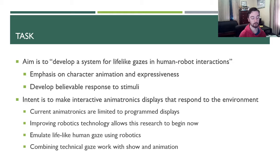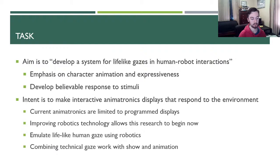Improving robotics technology allows this sort of thing to start happening now. Things like SLAM and computer vision are making it easier for robots to pick up on things happening in the environment and react accordingly. The goal of this research was to create human-lifelike gaze with robotics, combining the technical work already done with robotic gaze with a show and animation aspect — putting a different application to this technology.